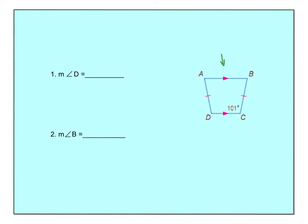Looking at an example: we have one pair of parallel sides, which means it is a trapezoid. Then they tell us these two sides are congruent, which means this is an isosceles trapezoid. Now let's change gears a little bit.